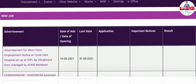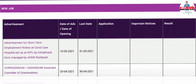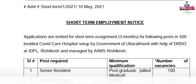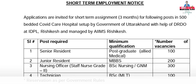Advertisement for short-term employment notice at COVID Care Hospital set up at IDPL, Uttarakhand, managed by AMCDC Case. This is a COVID-19 vacancy. Applications are invited for a short-term assignment of 3 months for the following posts in a 500-bed COVID Care Hospital set up by the Government of Uttarakhand with the help of DRDO at IDPL, managed by AMCDC Case.